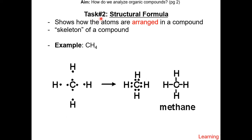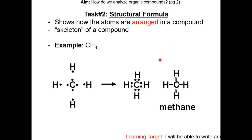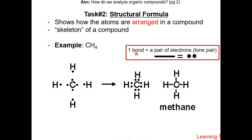Task two is a review of structural formula from Unit 5. If you're very familiar with structural formula, skip to task three, which is the condensed structural formula. Structural formula shows how atoms are arranged in a compound — think of this like a skeleton of a compound. One bond is equal to a pair of electrons. Now we're going to review how to draw the structural formula of a substance.